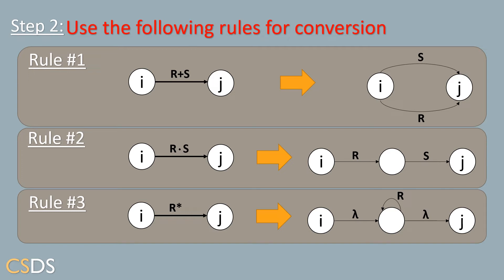So rule one, we will convert an R or S transition to two separate arrows, an S arrow and an R arrow. Meaning we have two new transitions, an S transition and an R transition.